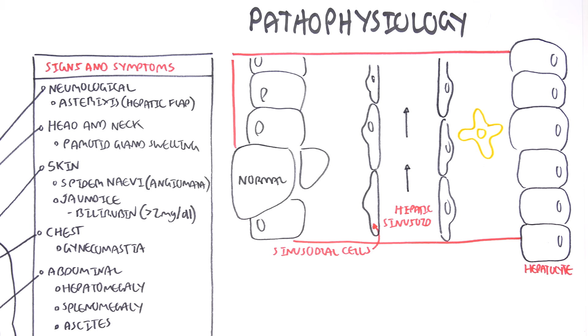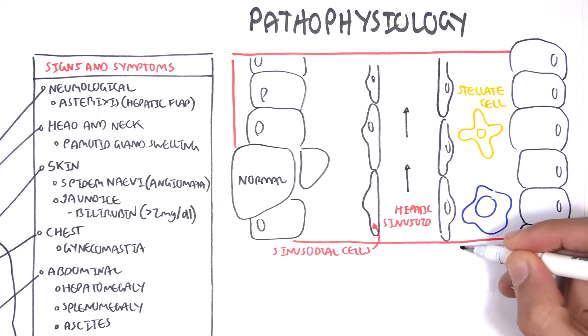You have your stellate cells here. Stellate cells are very important in the pathogenesis of liver cirrhosis because these stellate cells are usually dormant and at rest. But in cirrhosis, they are activated.